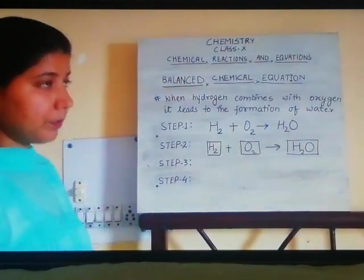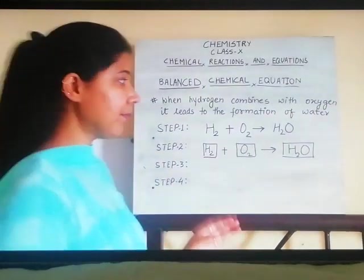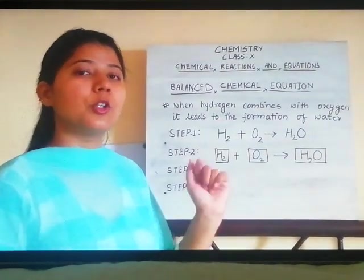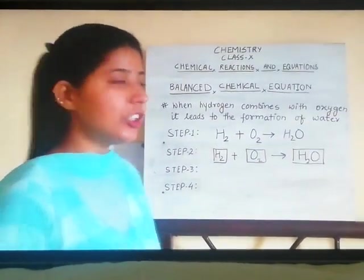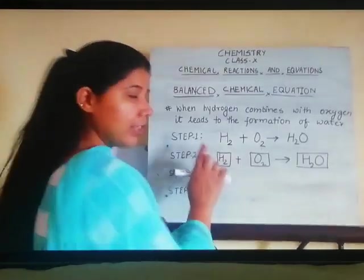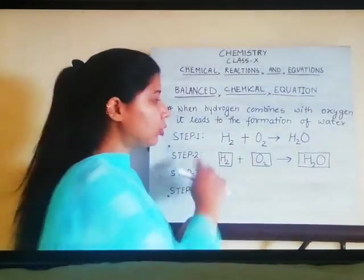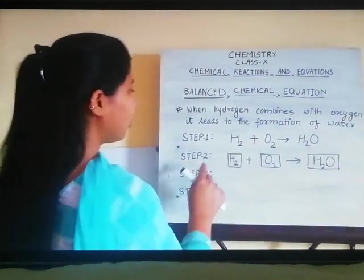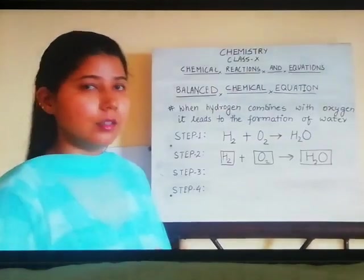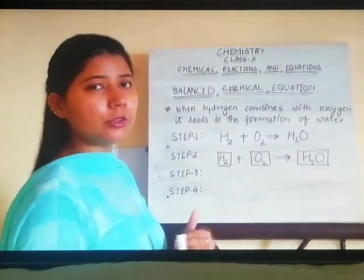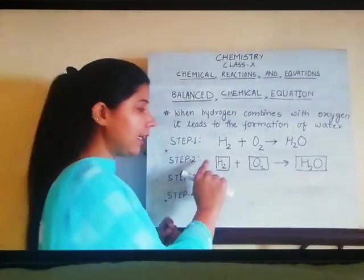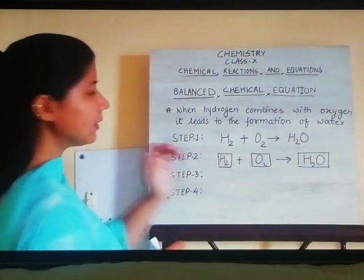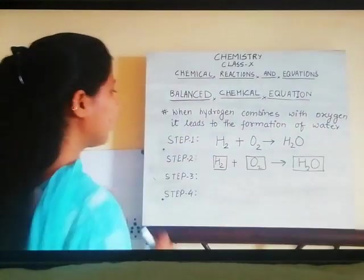Then, next step to enclose all these elements, compound, molecules given in the reaction in a box. Science is having reasons behind everything. Reason for this - why I am putting all the elements or compound in a box? Because you are not going to make any change in this. It will remain H2. You cannot make it as 2H. You cannot add anything inside the box. If you want to write something, you are going to write in front of the box. You are not going to write anything other than this point. Only at the front. First step, skeletal equation. Second step, to enclose it in the box.